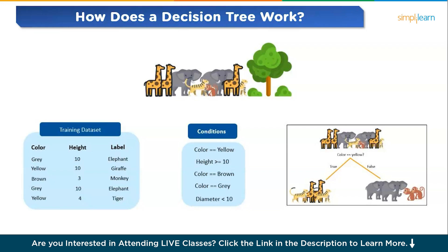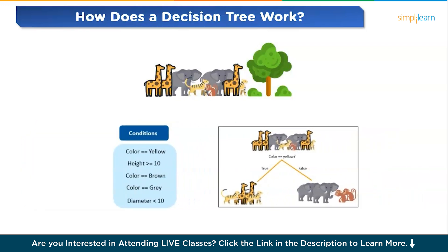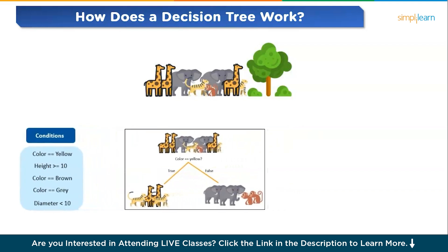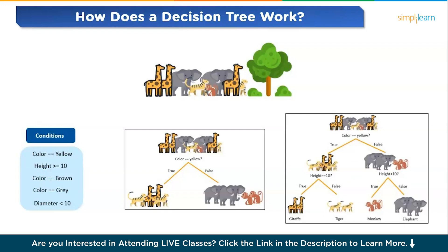With true and false branches, the entropy after splitting should decrease considerably. However, we still need to split the child nodes at both branches to obtain an entropy value of 0. We will split both nodes using the condition height less than 10 and height greater than 10. The results give entropy of 0, so this decision tree can now predict all the animal classes in the data.